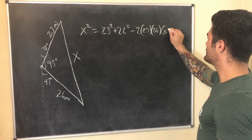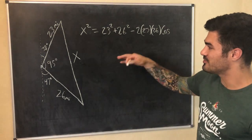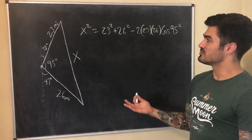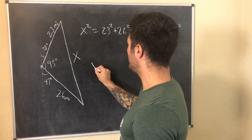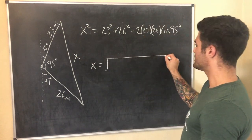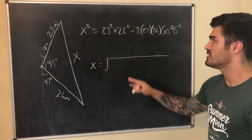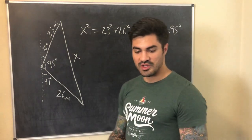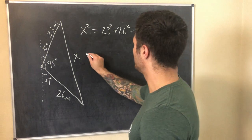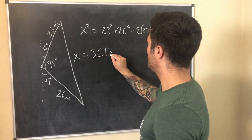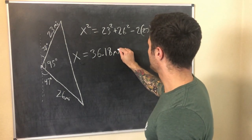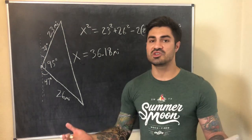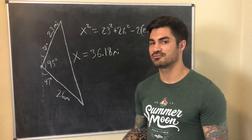We take the positive square root since this is a positive length: x equals the square root of the whole expression. Punching that into the calculator gives x equals 36.18 miles. That's the distance between the two ships at 6 p.m. The general approach: first try law of sines, and if that doesn't work, try law of cosines.